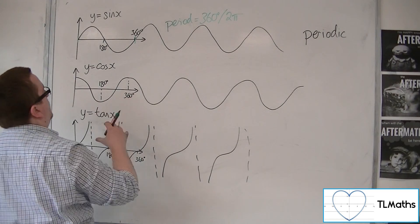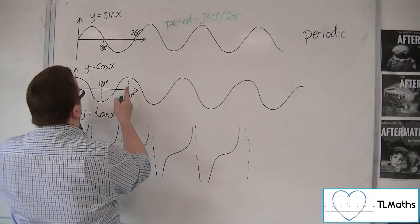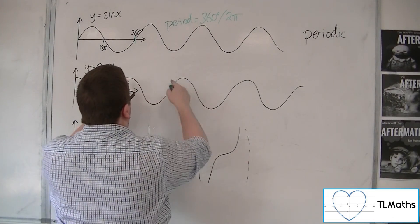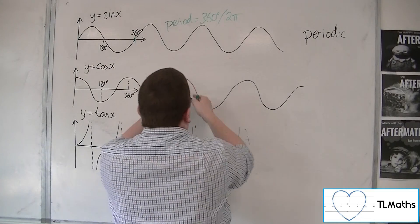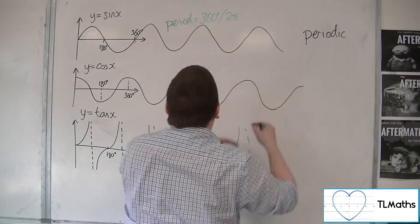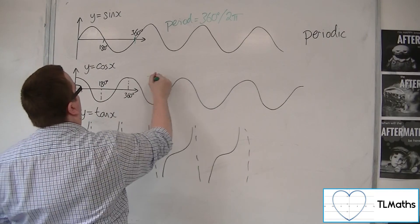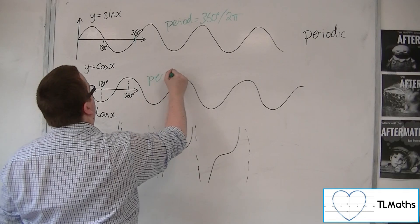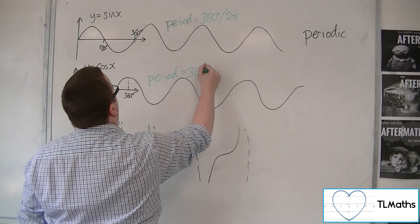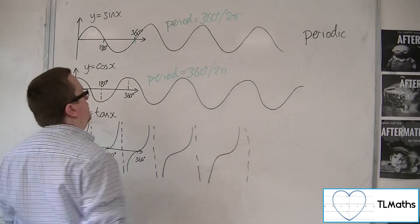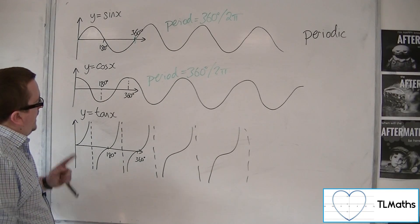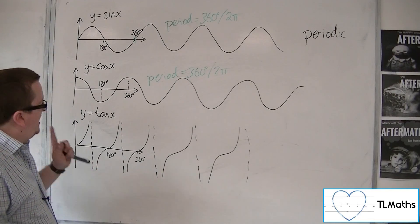The same with cosine — that section is repeated, then repeated again, and so on. Cosine also repeats itself every 360 degrees or 2 pi radians.